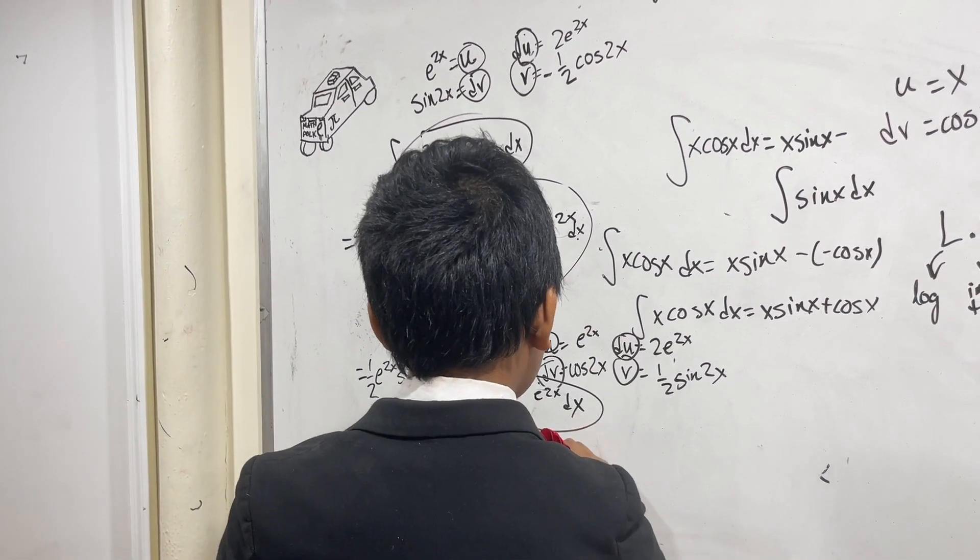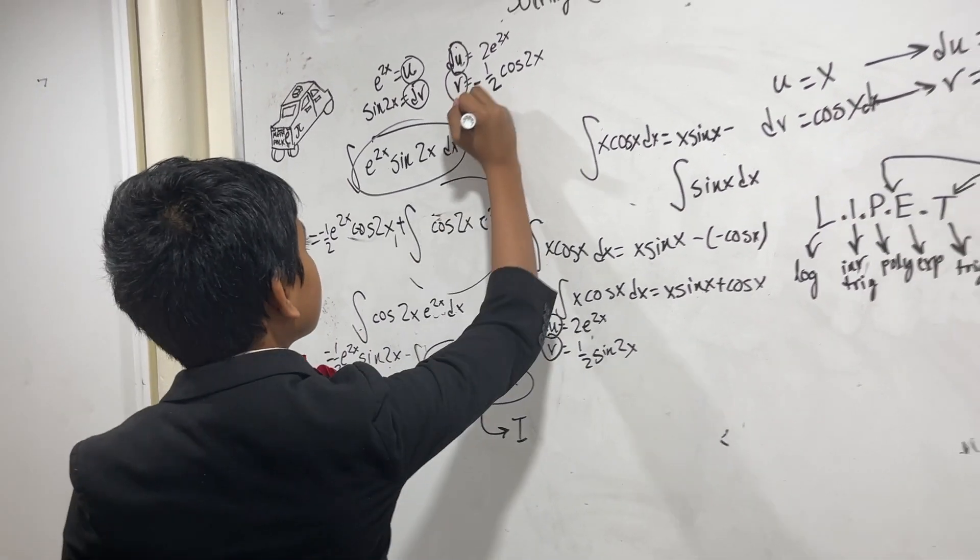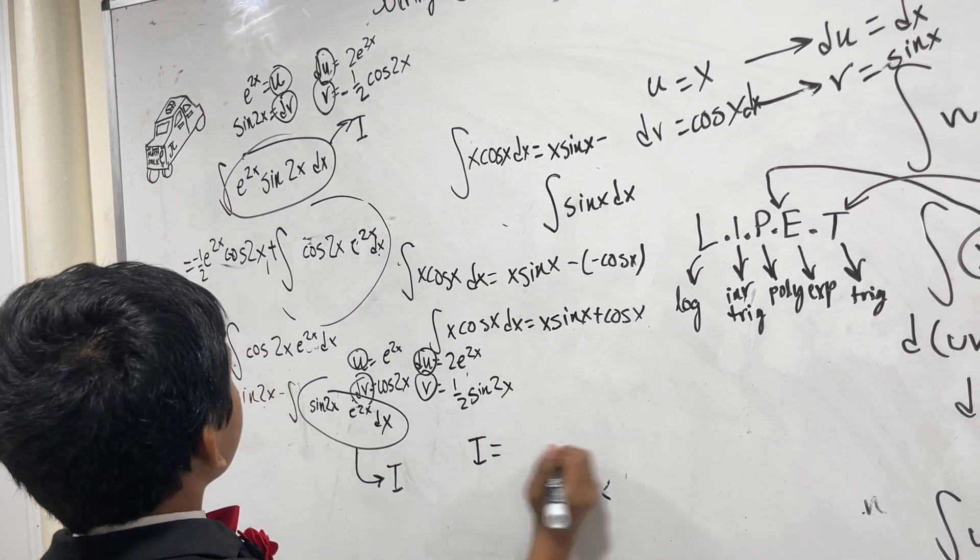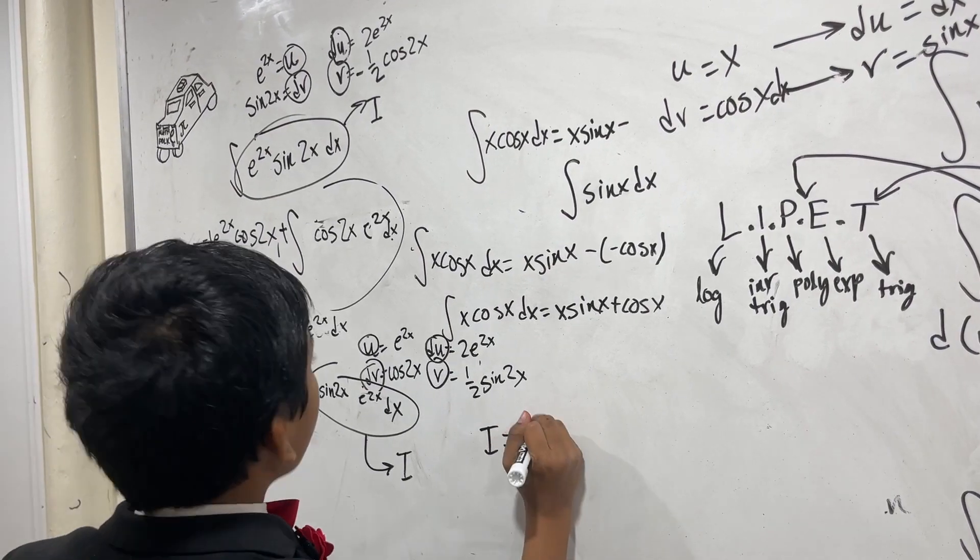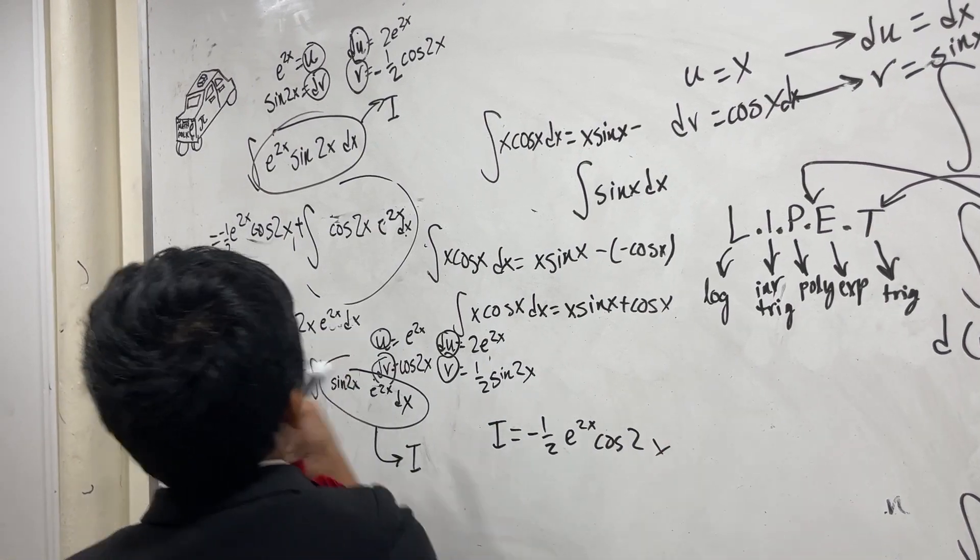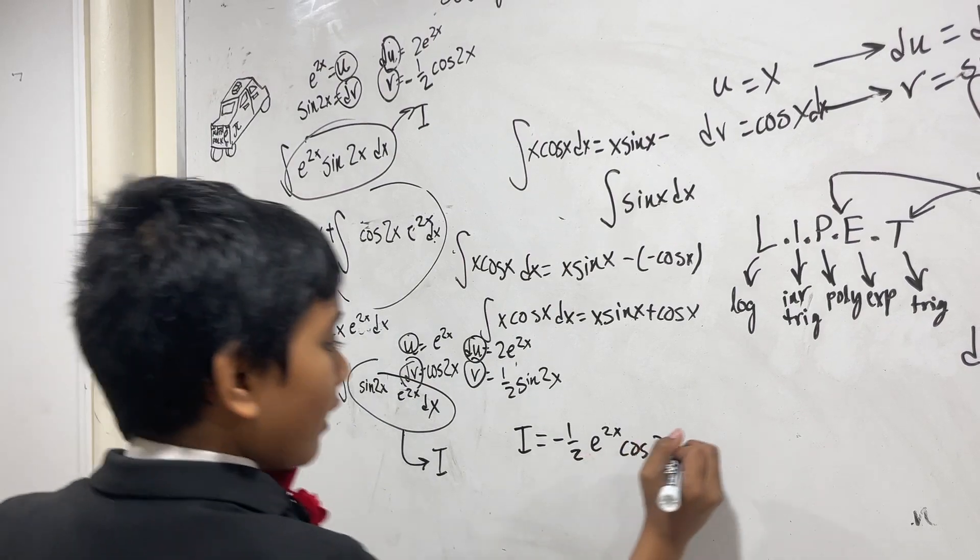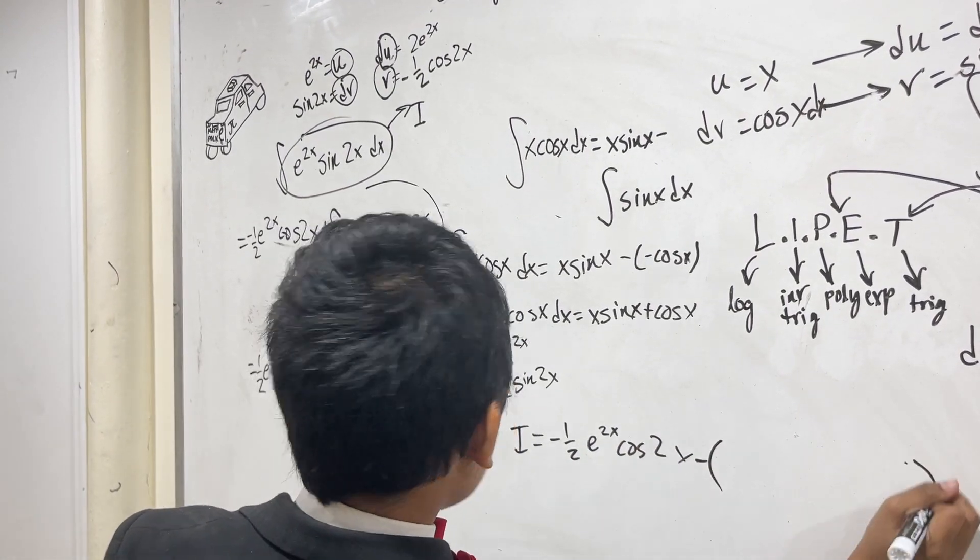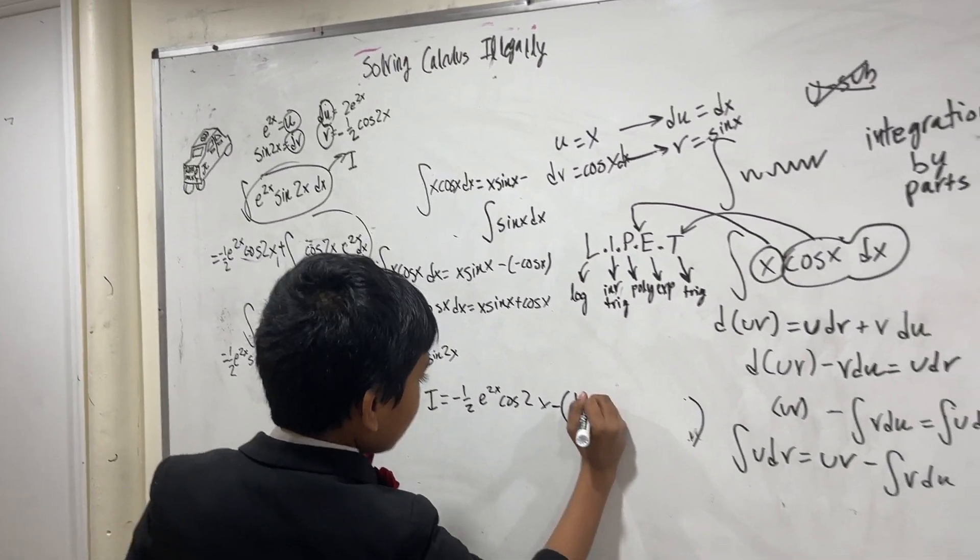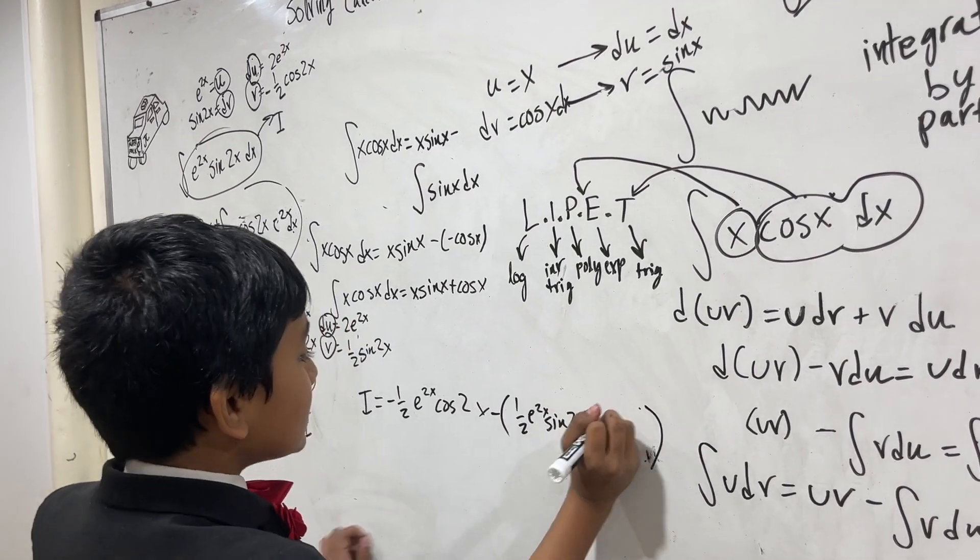So let's call this i for integral. Then we know that this is also i, of course. So the integral that we're trying to find, i, is equal to minus 1 half e^(2x) cosine 2x. And of course we have this boring integral right here. But remember, that's equal to this part. We have minus negative, no not negative, 1 half e^(2x) sine 2x minus i.